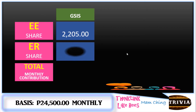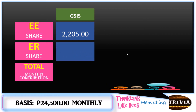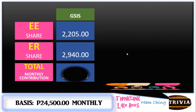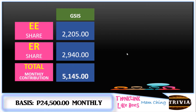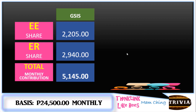For the employer, ₱24,500 multiplied by 12 percent gives ₱2,940. So all in all, the total monthly GSIS contribution is ₱5,145.